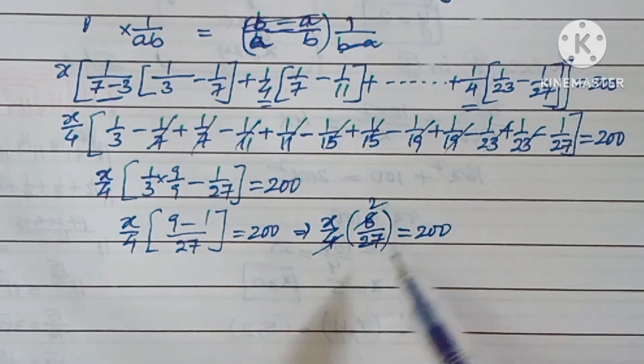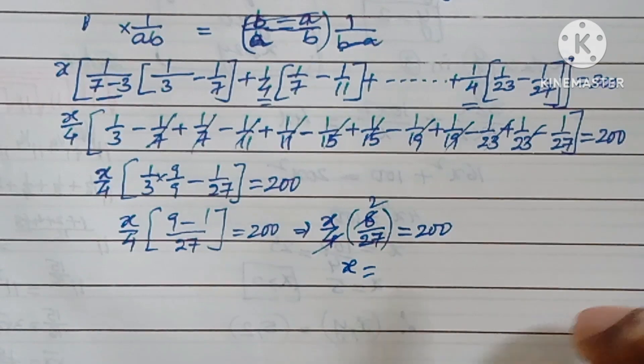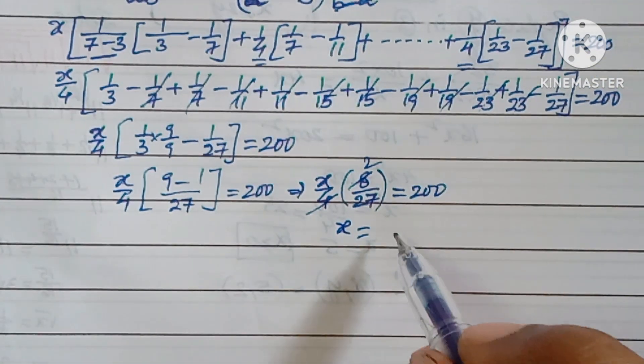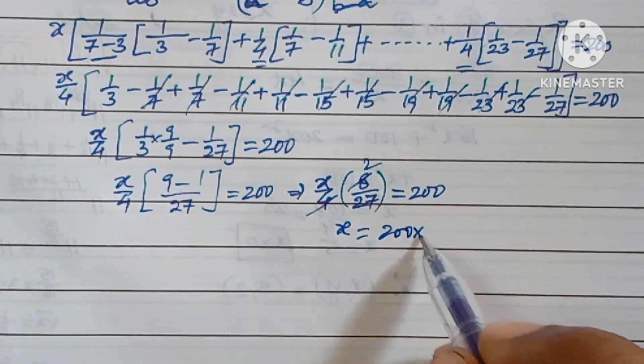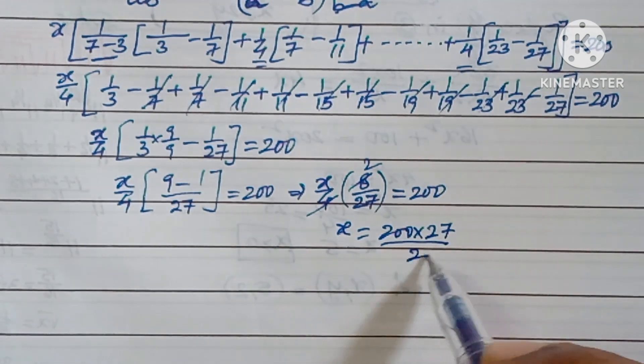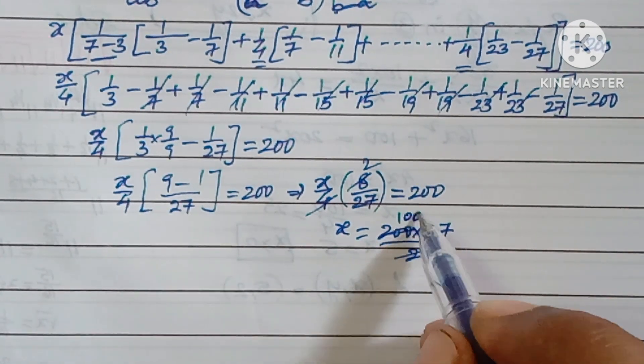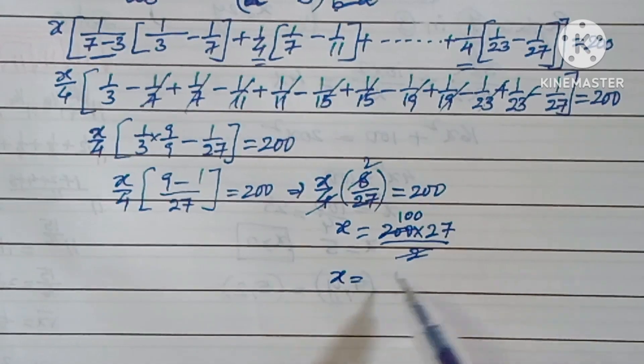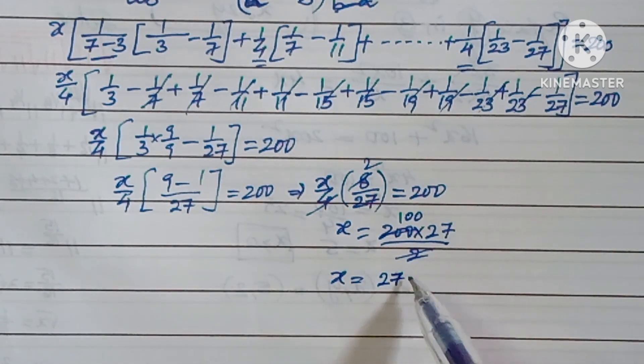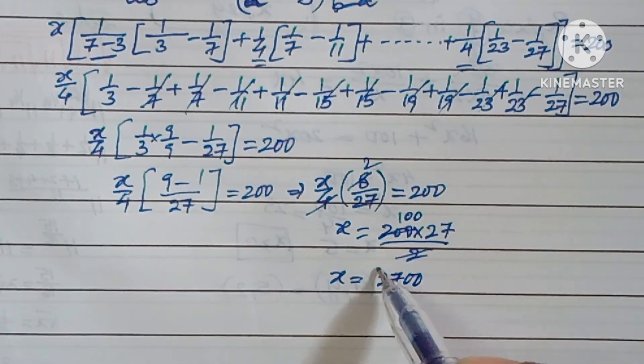So x = 200 × 27/2. Here it will go 100 times, so x = 2700.